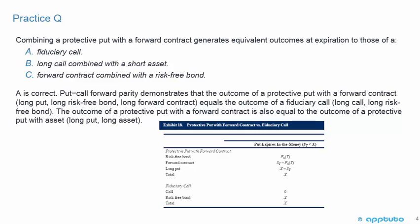Put-call forward parity demonstrates that the outcome of a protective put with a forward contract — long put, long risk-free bond, long forward contract — equals the outcome of a fiduciary call — long call, long risk-free bond. The outcome of a protective put with a forward contract is also equal to the outcome of a protective put with an asset, which is long put and long the asset.